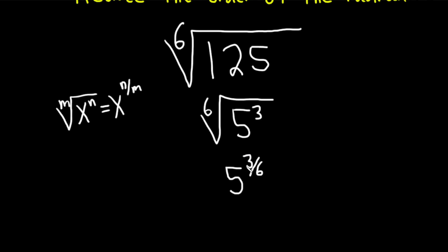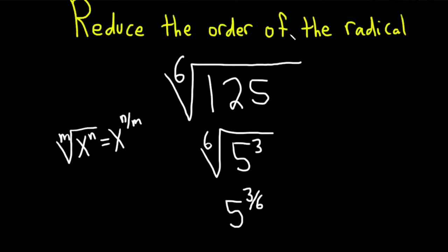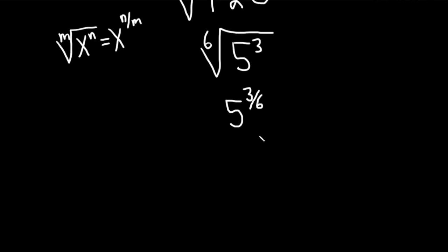And now we can simplify, so we're essentially reducing the order. This is the key step. This is where you do some cancellation. 5 to the 3, 6, well, 3 goes into 3 one time, and it goes into 6 twice. So this is 1 over 2.